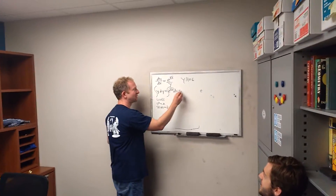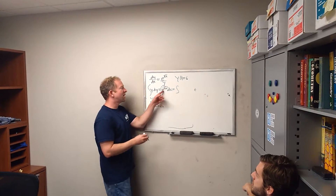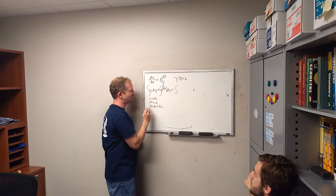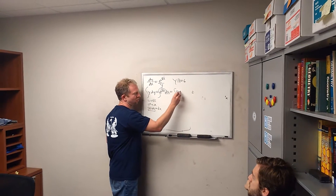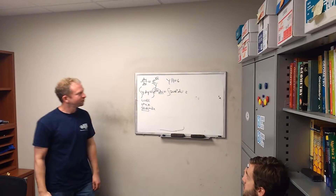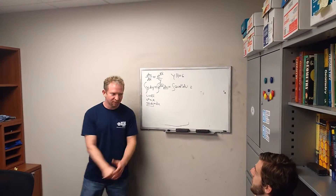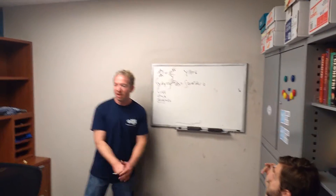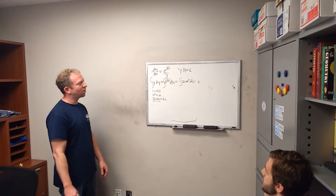And then this becomes... DX is 2U du, and then we have e to the u. So DX is 2U du, so you get 2U·e^u du. Yes. And Y dy is the other side. So you're just subbing those in? Yep.